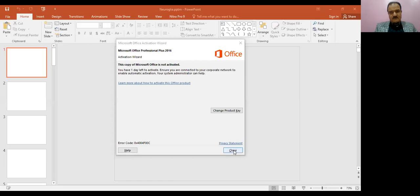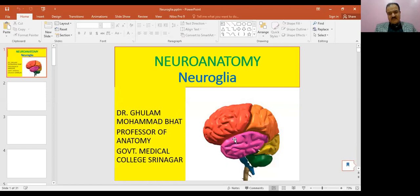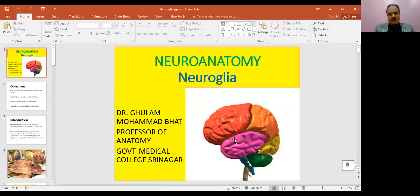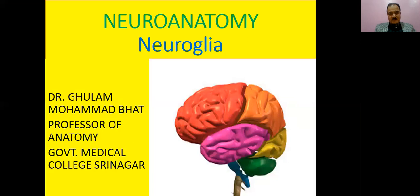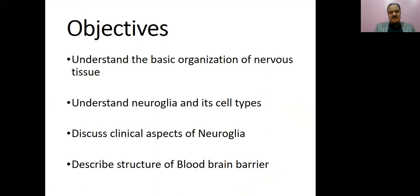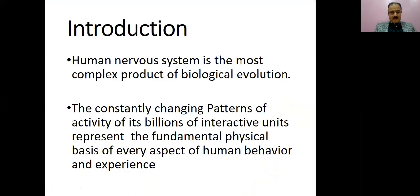Good evening. Today we are starting with neuroanatomy and our topic is neuroglia. You have already been taught some basics about neuroanatomy in general principles of anatomy. The objectives of today's class are: understand the basic organization of the nervous system, understand neuroglia and its cell types, discuss clinical aspects of neuroglia, and describe the structure of the blood-brain barrier.